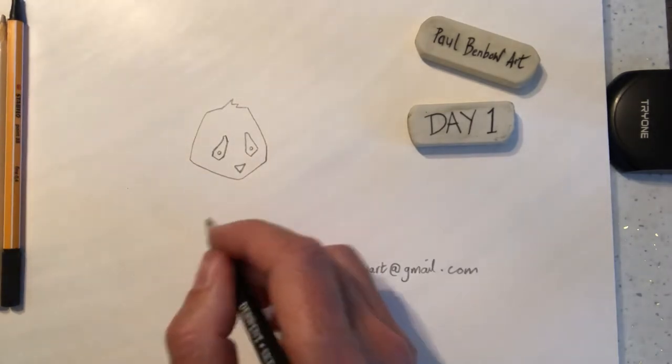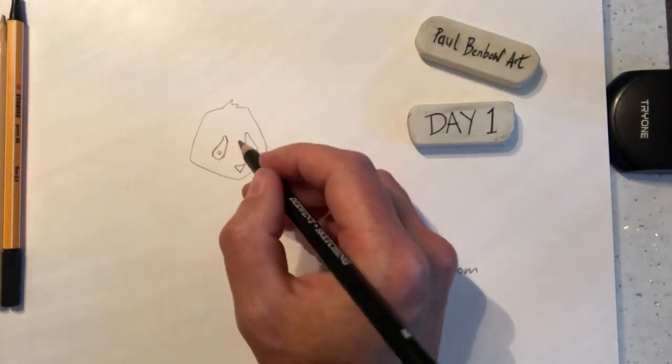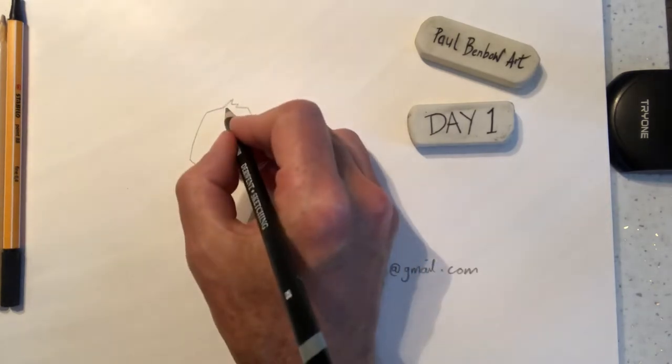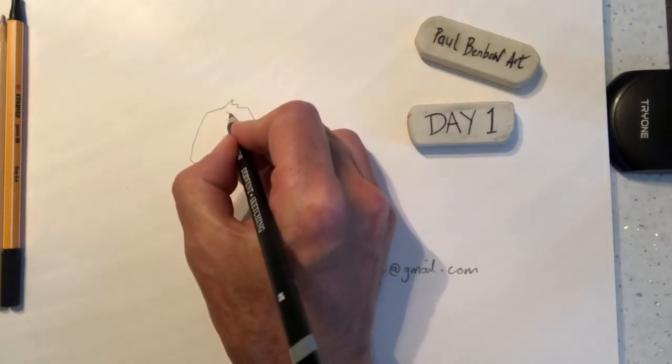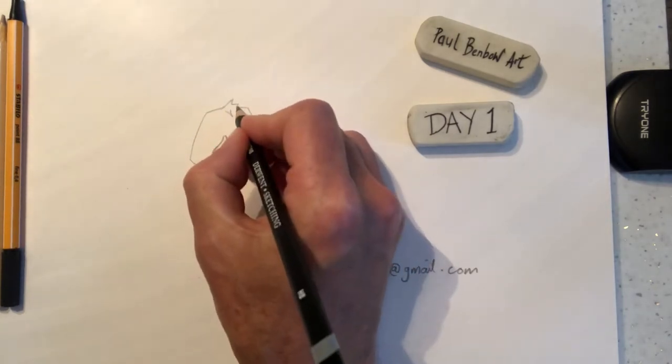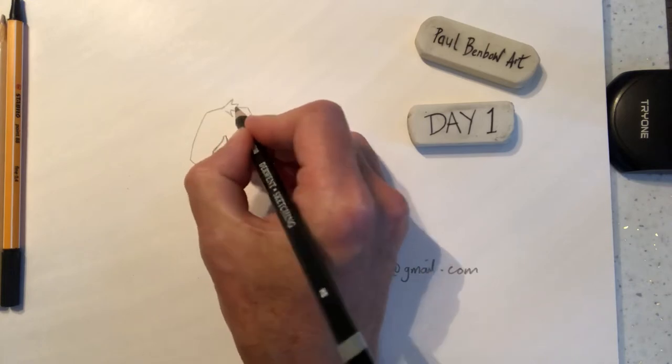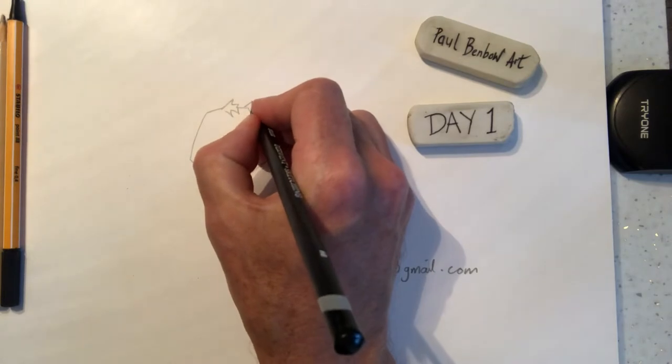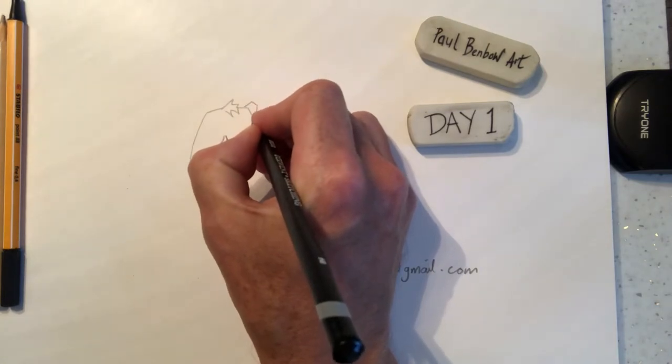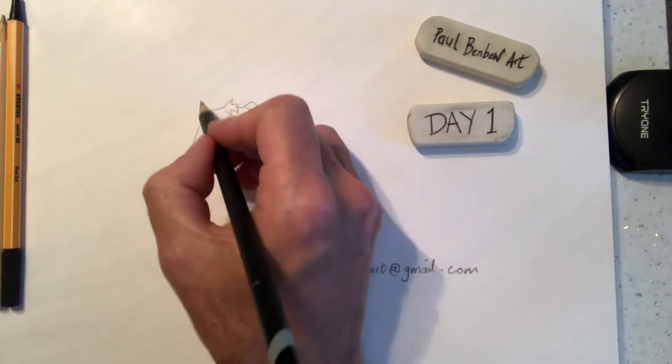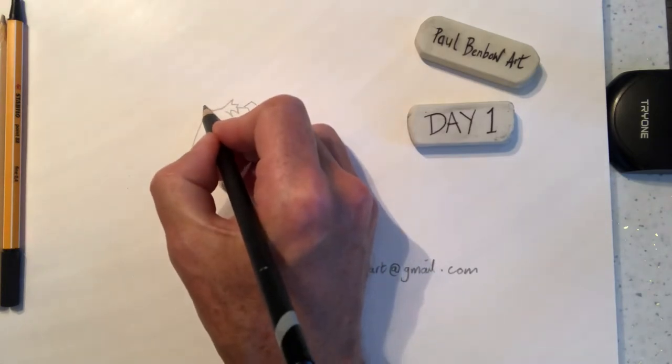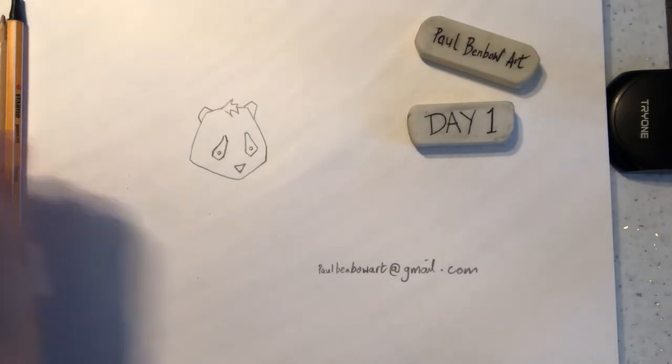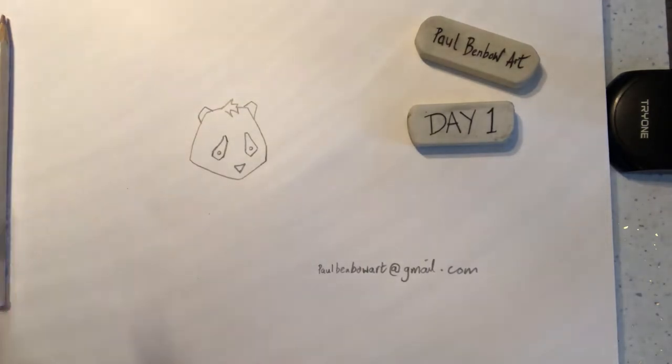This is not looking much like a panda quite yet, but it will do in a little while. Back to these spikes here, we can just draw some spikes in there like hair, and then we want the ears in. You want these quite angular - we go up here and across and down.